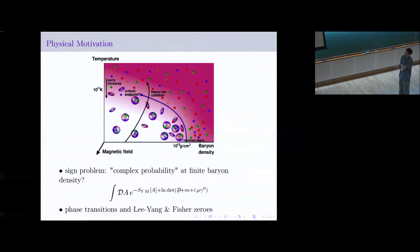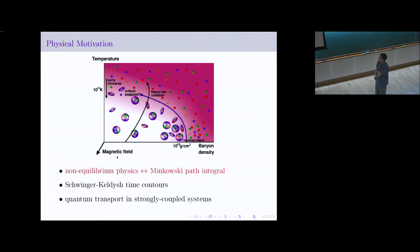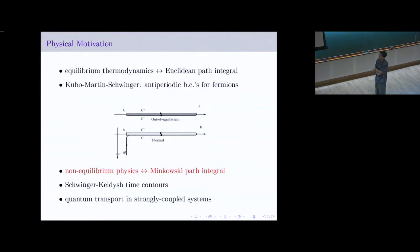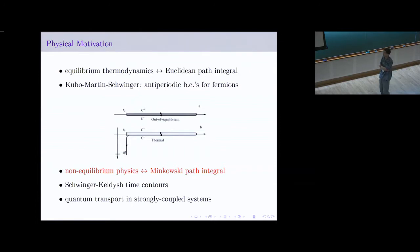There are also related problems in condensed matter physics related to understanding phase transitions in the path integral formalism. Another one already mentioned: equilibrium thermodynamics is tailor-made for the Euclidean path integral. But when we go to non-equilibrium processes, we really have to deal with the Minkowski path integral because of the Schwinger-Keldysh time-contour formalism.